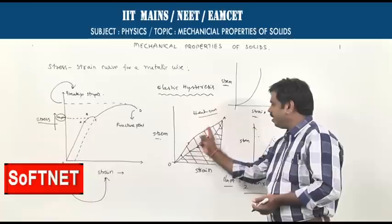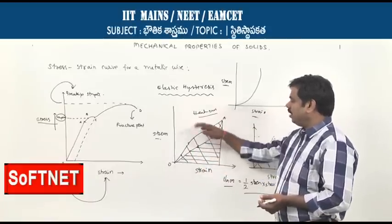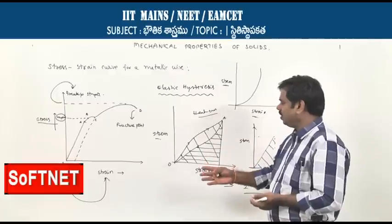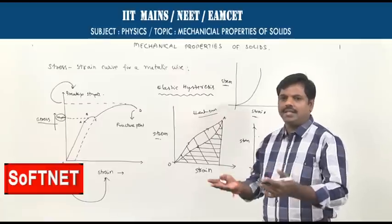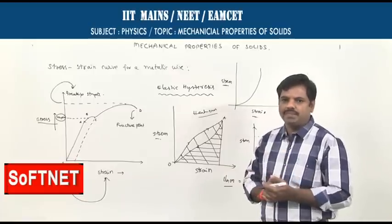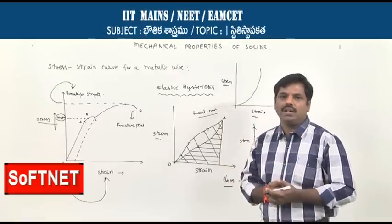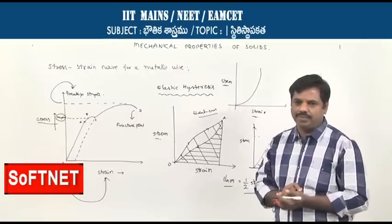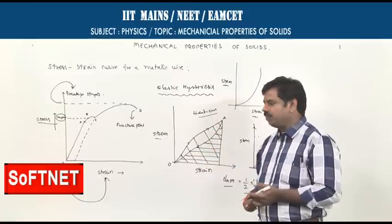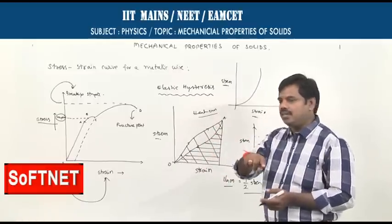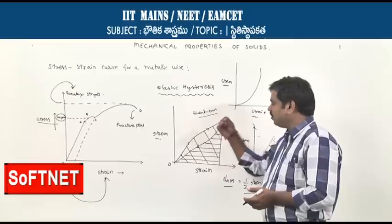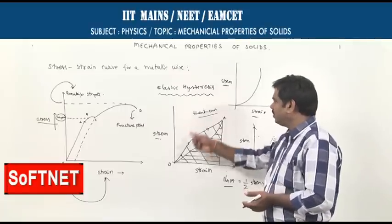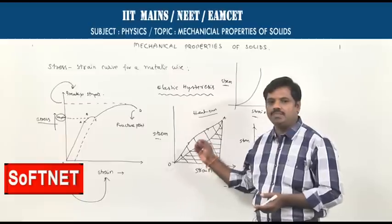If the area of the hysteresis loop is very large, a large amount of heat energy is wasted during loading and unloading. In a car, the tyres experience large pressure and strain as they move, then return to original shape. If the hysteresis loop area is large, much heat is generated and the tyre damages easily. So for car tyres, we choose rubber whose elastic hysteresis curve area is very small.